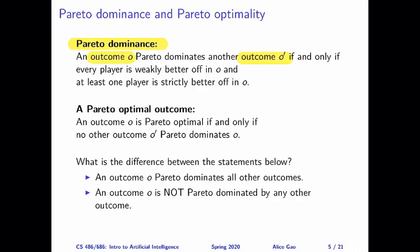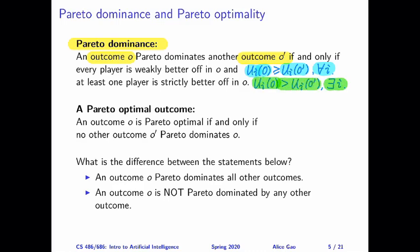Pareto dominance gives us a way of comparing two outcomes of the game. We say outcome O Pareto dominates another outcome O prime if the following two properties are both satisfied. The first property is that every player weakly prefers O to O prime — that is, for every player, the player's utility in outcome O is greater than or equal to their utility in outcome O prime. The second property is that at least one player strictly prefers O to O prime — there exists a player whose utility in O is strictly better than in O prime.